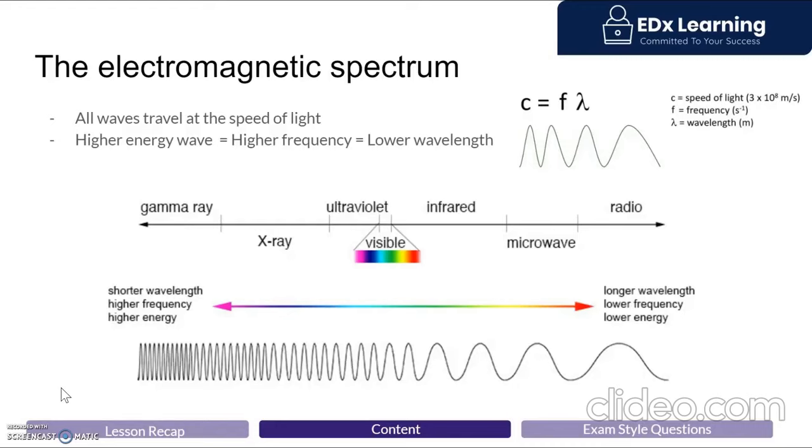With AAS, the energy that you input is electromagnetic radiation. This refers to all the waves that travel at the speed of light, approximately 3 times 10 to the power of 8 meters per second. We categorize these waves based on their frequency slash wavelength.